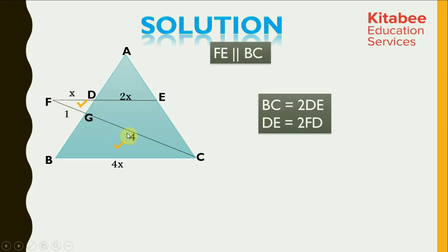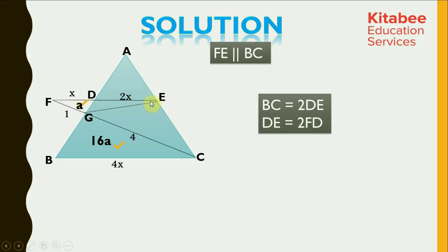FG and GC must also be in the ratio of 1 to 4 as the two triangles are similar. Let's say the area of triangle FDG is A units. As these two triangles have sides in the ratio of 1 to 4, their areas must be in the ratio of 1 to 16. So the area of triangle BGC comes out to be equal to 16A. Now, if we join G and E and look at triangle FGE, the line GD divides the base FE in the ratio of 1 to 2, so this area comes out to be equal to twice of A.